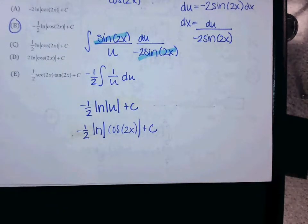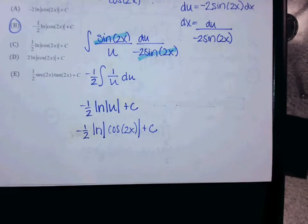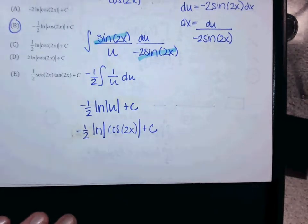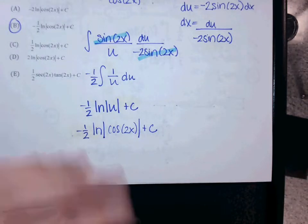Rule 10 on the integral side. Why can't you just pick U as tangent? Because the derivative of tangent 2x is secant squared 2x, and there's not another secant squared to cross out with that. So that's why we rewrote tangent as sine over cosine.